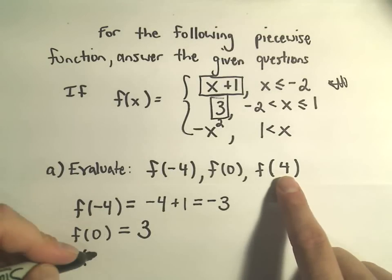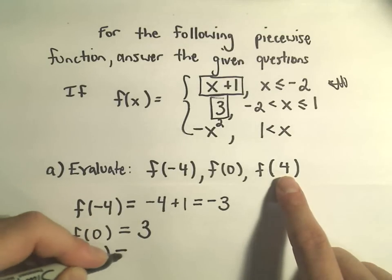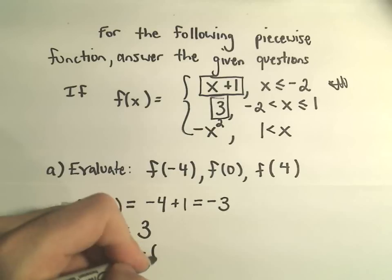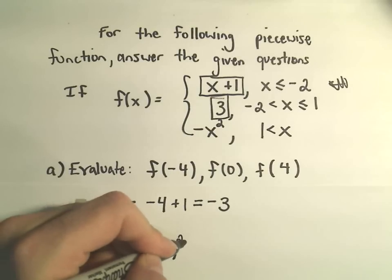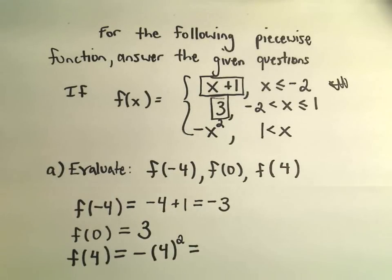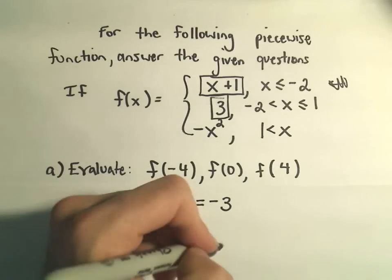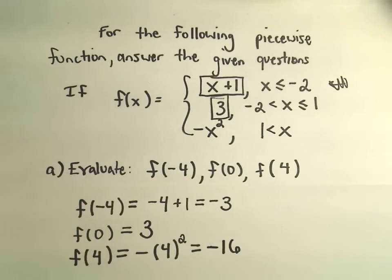And likewise, if I evaluate f of 4, well, 4 falls into this last interval since 4 is greater than 1. So it says we'll get negative 4 squared. Be careful with your order of operations because we have to square first, so 4 times 4 is 16, and then we tack on our negative. And now we have the value for f of 4.